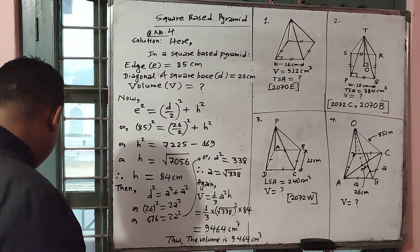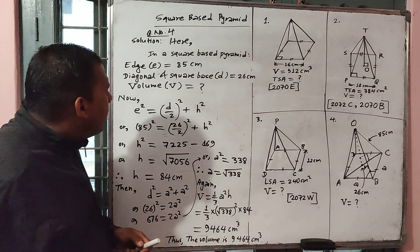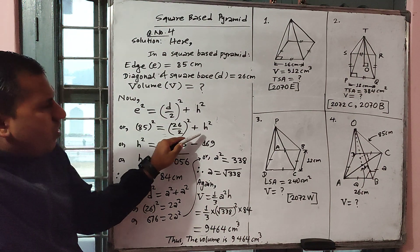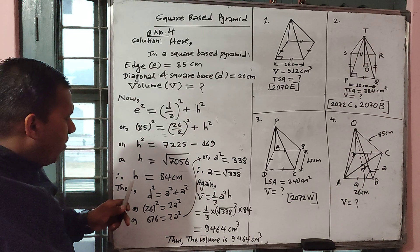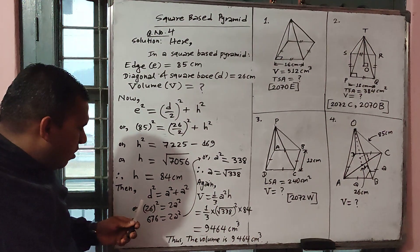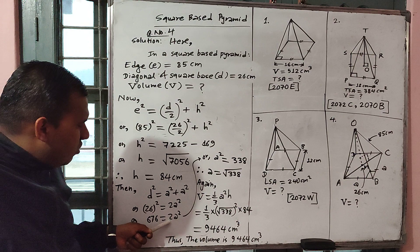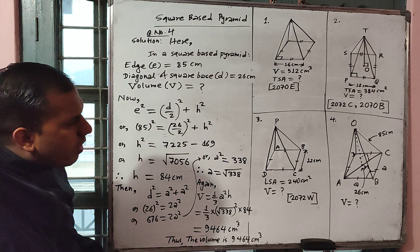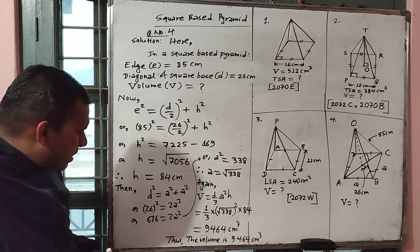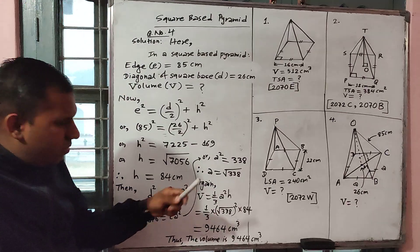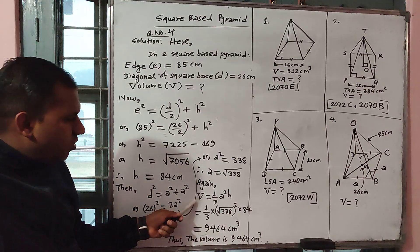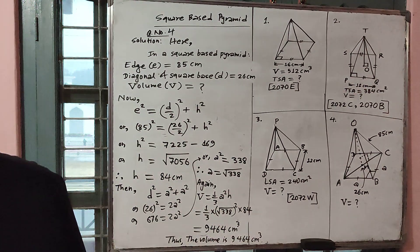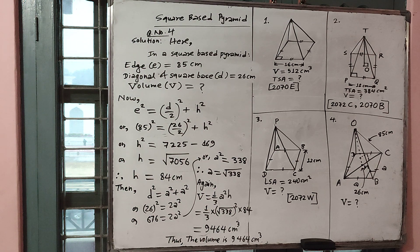In the summary of question number 4: first of all by using the edge and diagonal of the square base we can find its vertical height. After finding vertical height, by using Pythagoras theorem we can find its length of side of square base — diagonal squared equals side squared plus side squared, taking right angle triangle ABC. After getting length of side of square base you can find volume equals one-third times A squared times height. Okay students, this was for today. Have a nice time, see you soon.